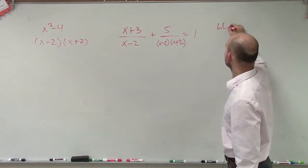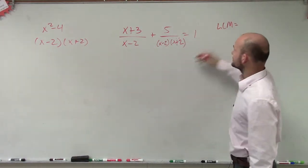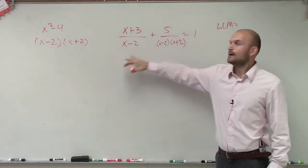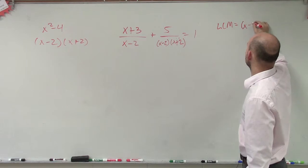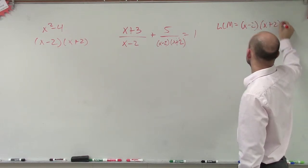So therefore, my LCM, or my least common denominator, is going to be x minus 2, which they both divide into. But then I also need to include the x plus 2. So my LCM is x minus 2 times x plus 2.